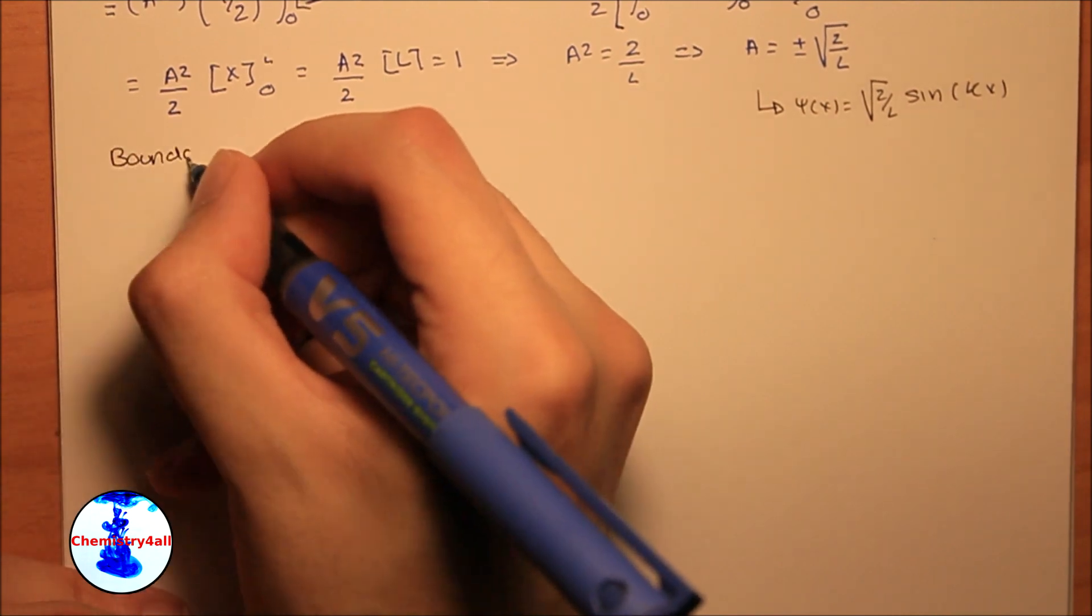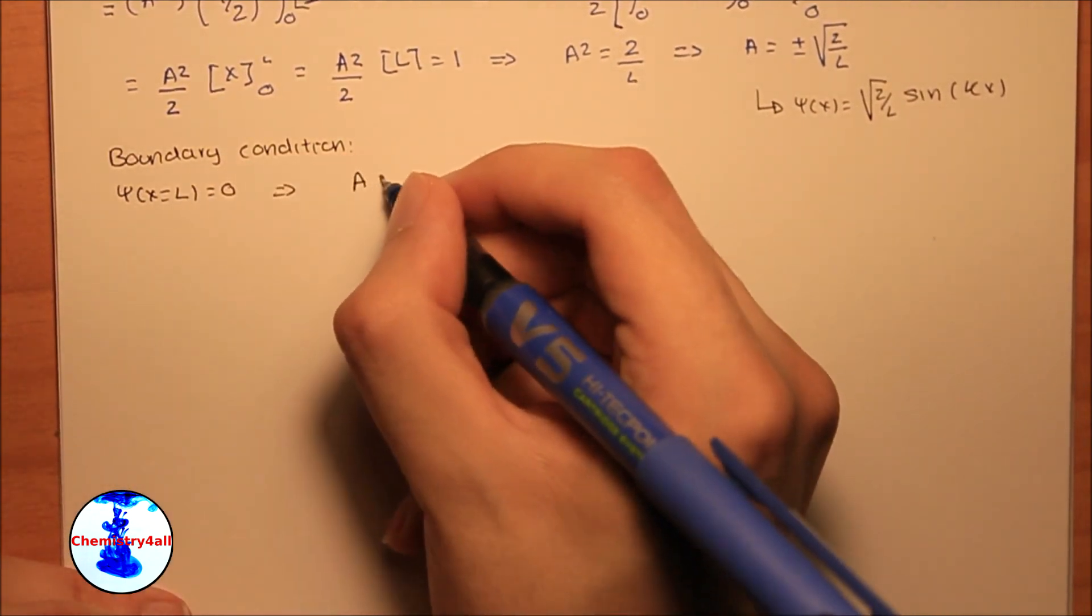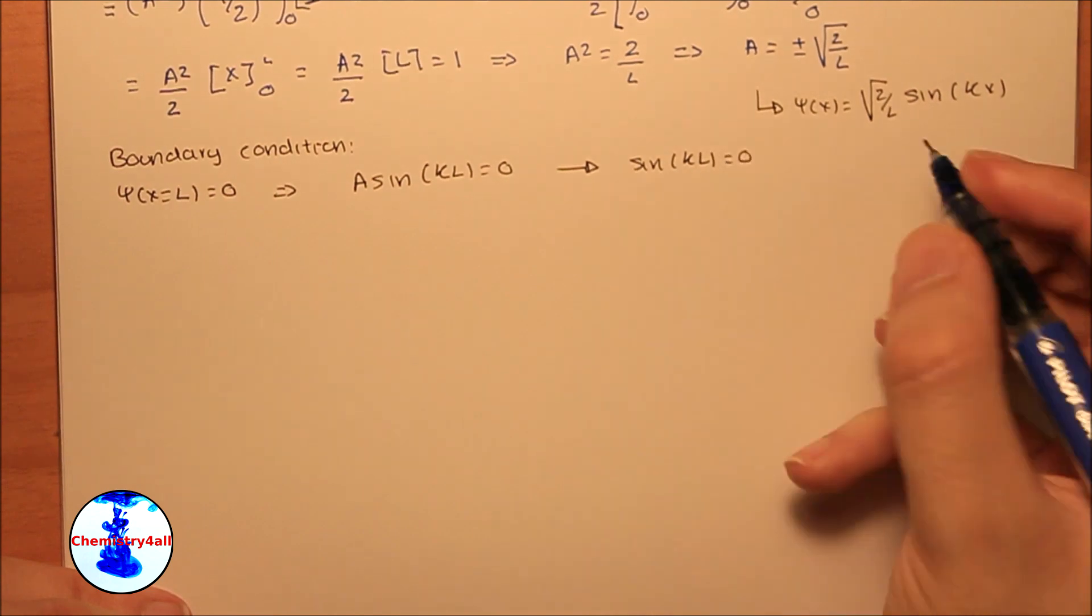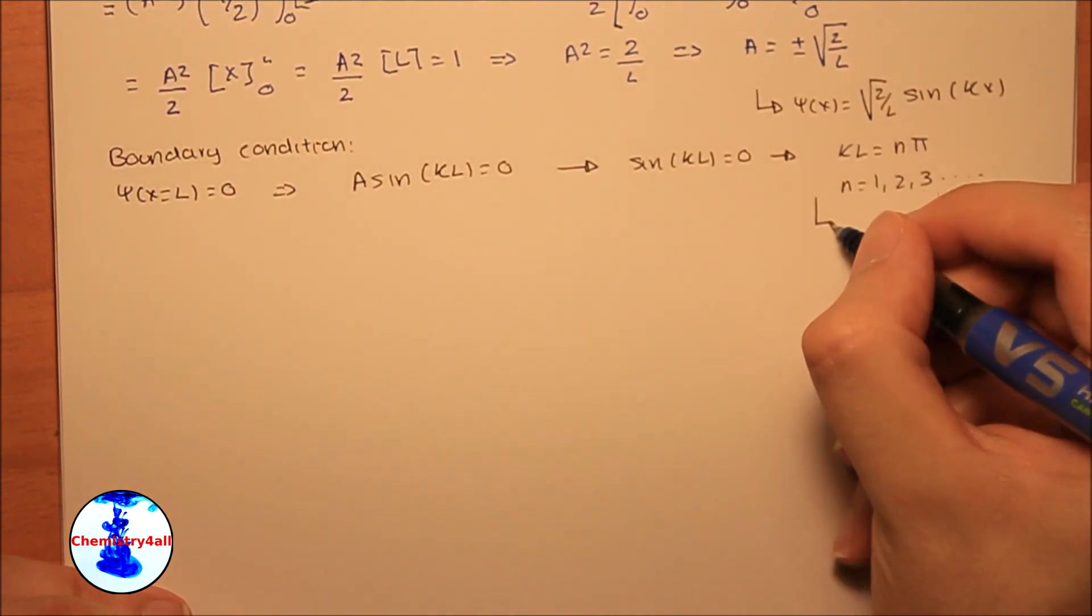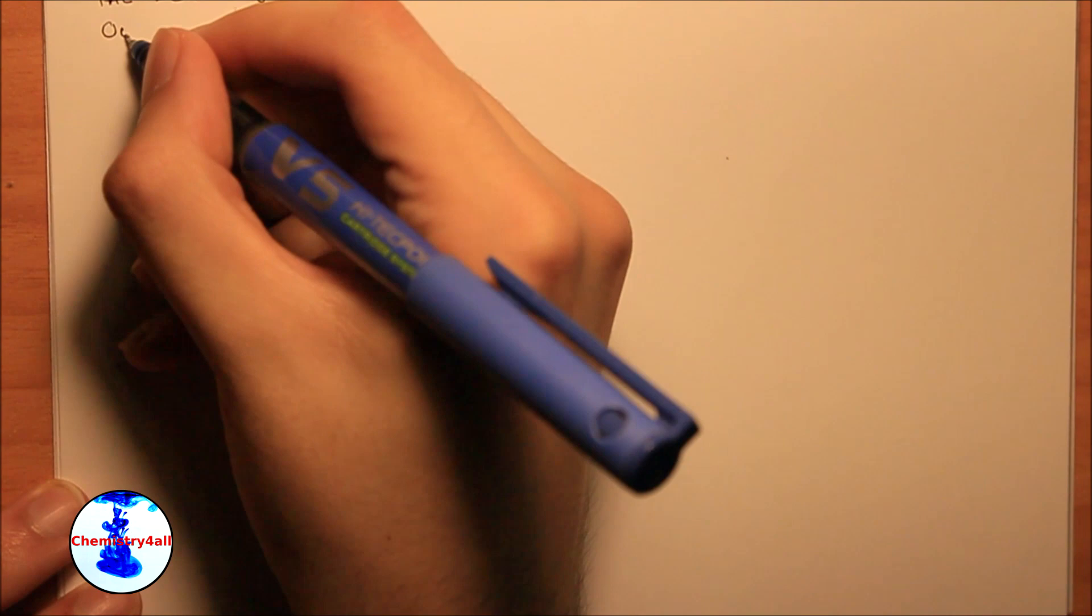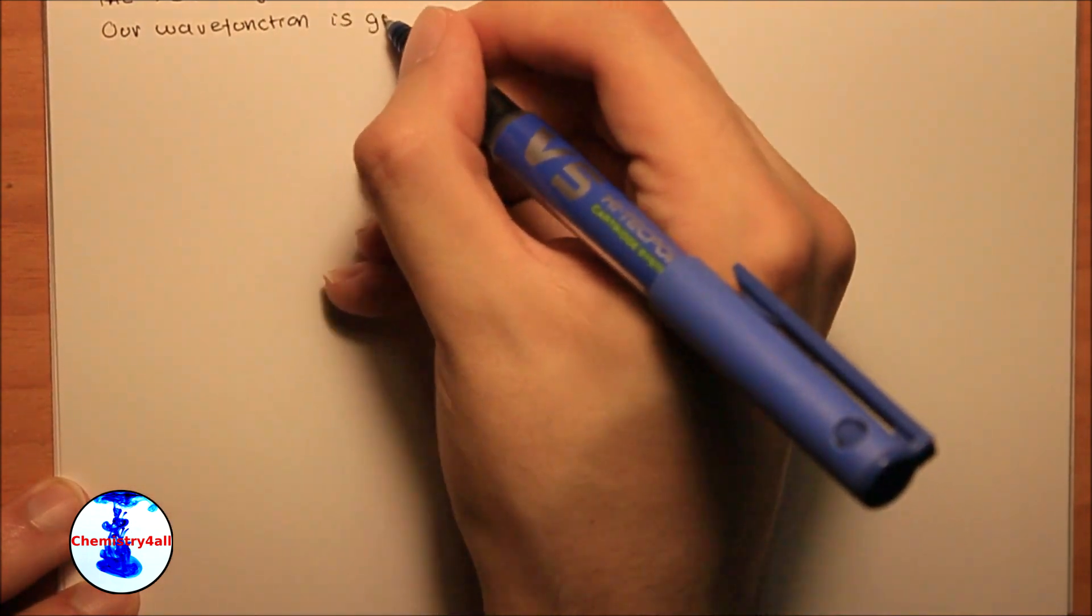On the other hand, now we can make use of the so-called boundary condition to get the value of k. And now we finally have the overall expression of our wave function.